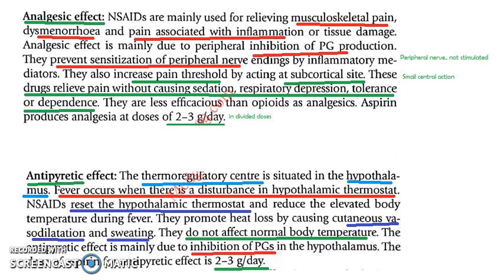Now the antipyretic effect: NSAIDs will reduce fever without affecting normal body temperature — that is a good thing. In the hypothalamus there is a thermoregulatory center. What NSAIDs do is reset the hypothalamic thermostat, working on the thermoregulatory center in the hypothalamus to reduce the elevated body temperature, while not affecting normal body temperature.